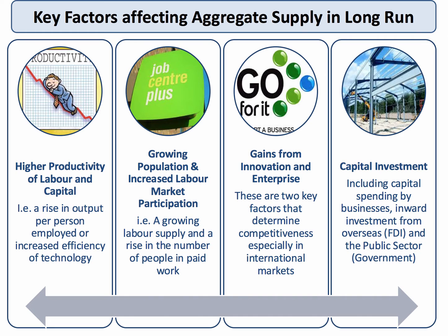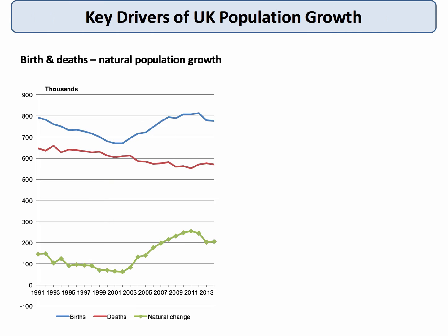Population is an important aspect of long-run aggregate supply for any country, particularly for developed countries such as the UK, where the rate of population growth until recently has been fairly slow. There are two main key drivers of population growth. One is natural population growth, which is determined by the birth rate minus the death rate.